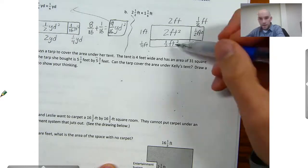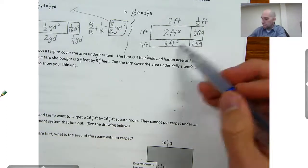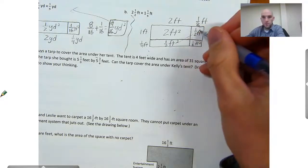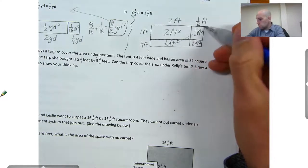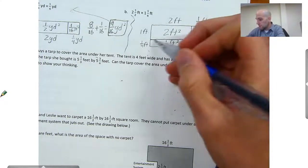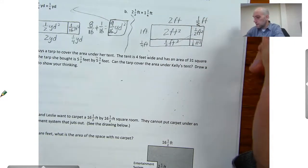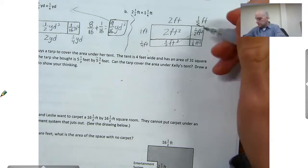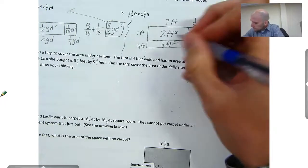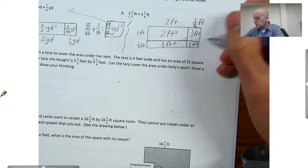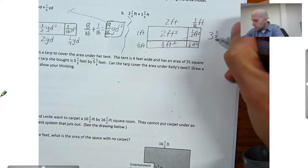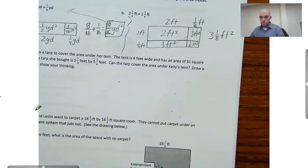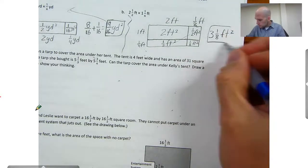Now we can add these together. I have 1 half and I have 1 half, and these two together are going to give me one whole. So I have 1 between the two of those. We have a long piece here for 1 fourth by 2 feet. That'll give us 2, so that's 3 square feet plus the other 1 eighth, which is 3 and 1 eighth square feet. That'll be our answer.